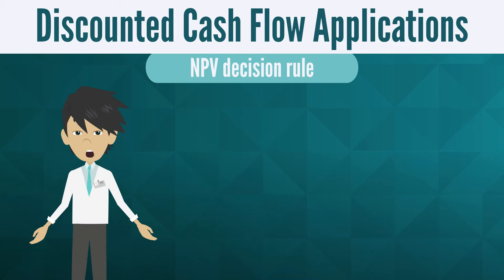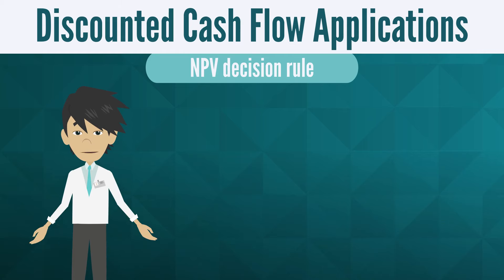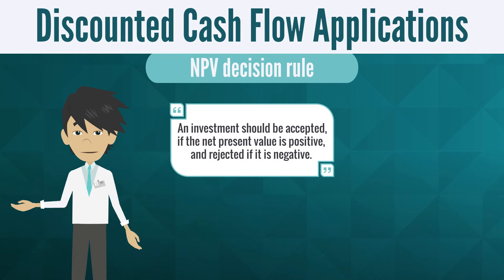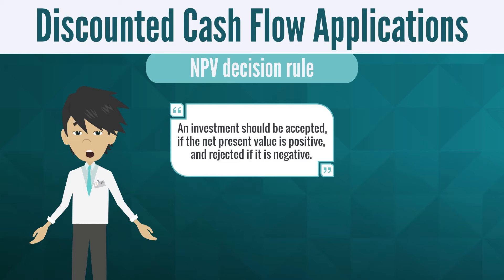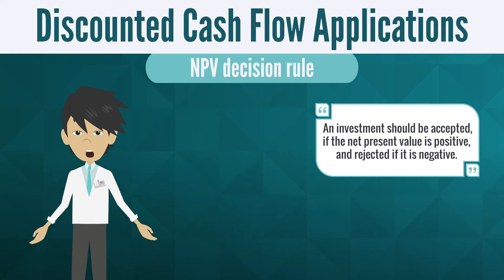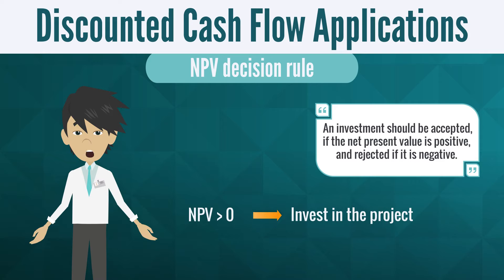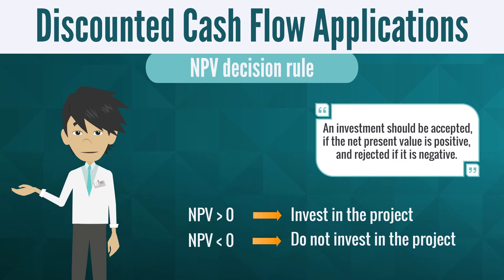Once we've completed each of the steps and come up with a final NPV figure, we can decide whether an investment is worth taking. The rule is as follows: an investment should be accepted if the net present value is positive, and rejected if it is negative. In other words, if NPV is greater than zero, we invest in the project; if NPV is less than zero, we do not invest in the project.